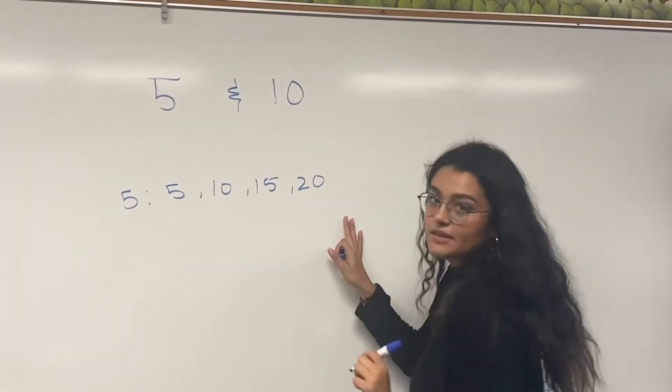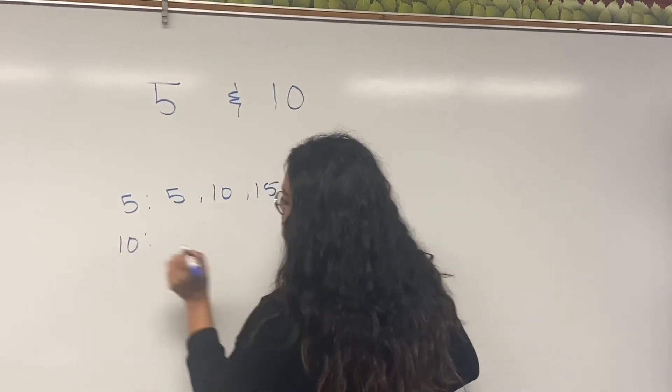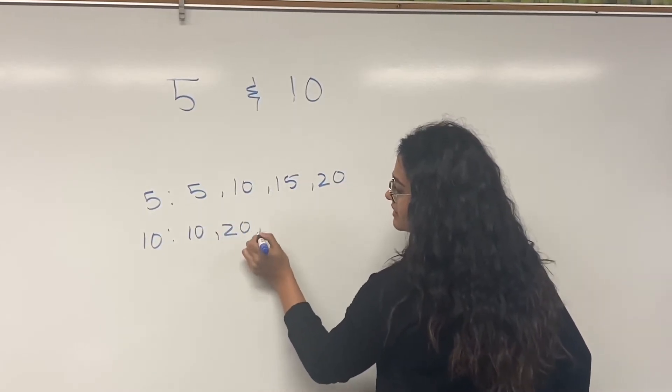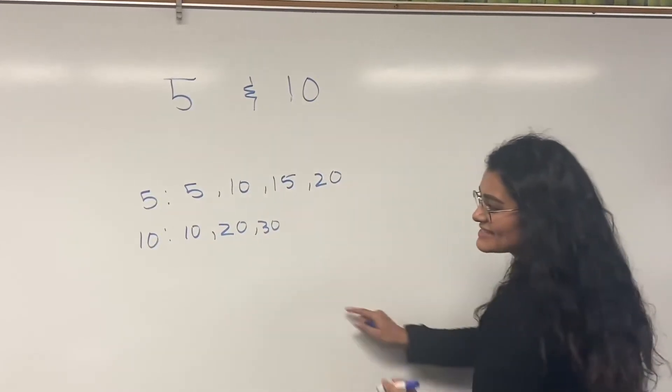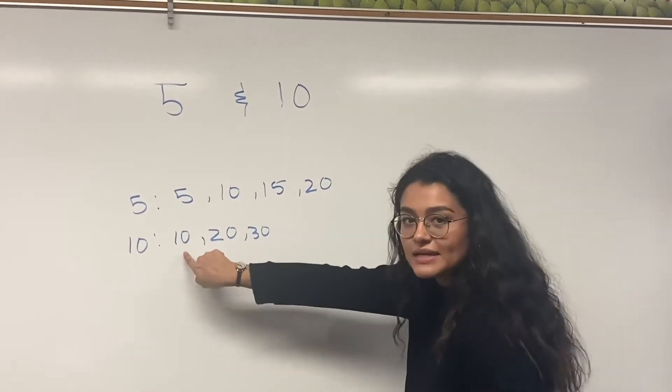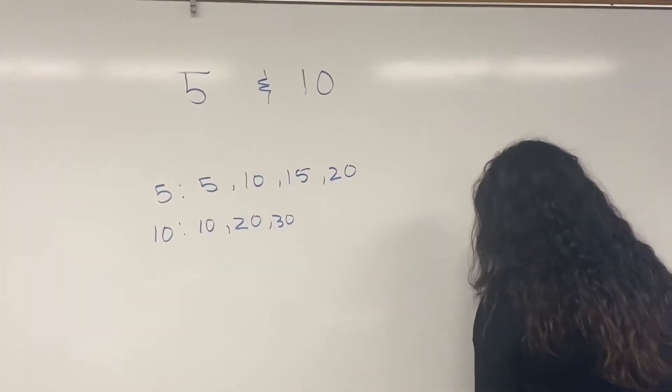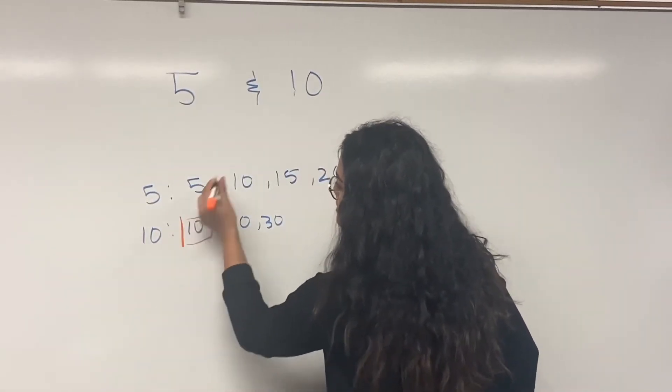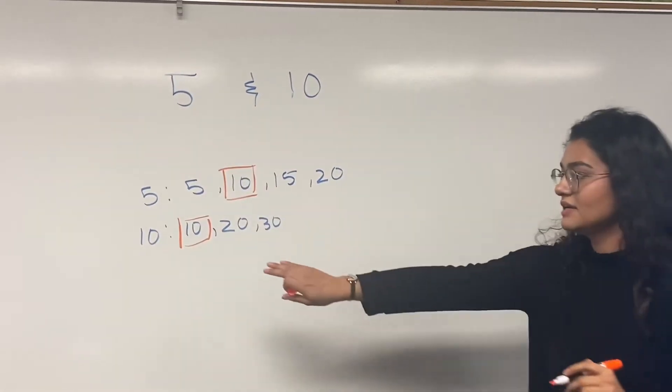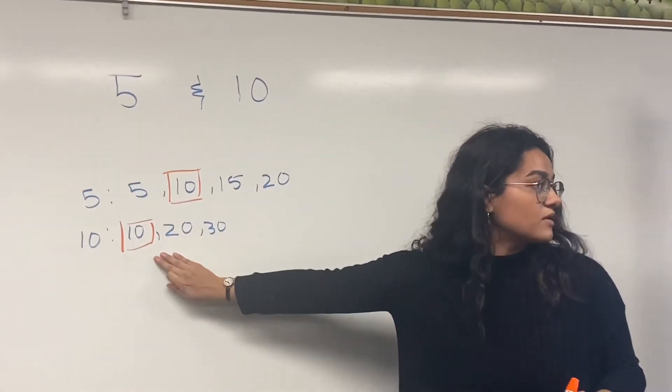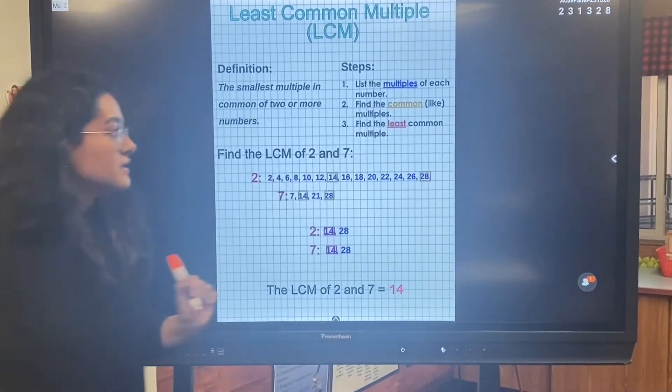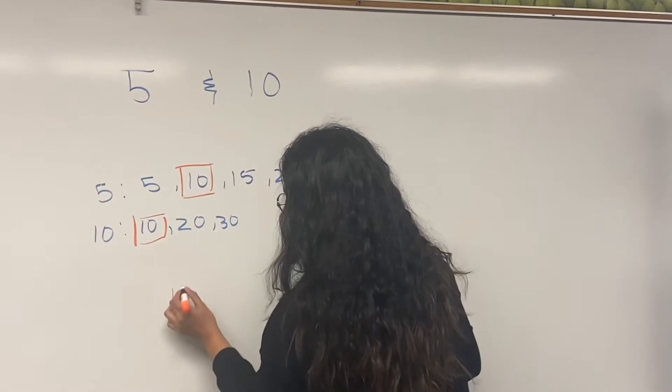I'm going to go on to my other number which is ten. And I'm going to skip count again. We start with ten, twenty, thirty. But you see, you guys, I already have my least common number. My smallest number that is in common with both of these is ten. That is my least common multiple. So we went through the steps. We listed the multiples of each number. We found the common multiples. And now we found the least common multiple, which is ten.